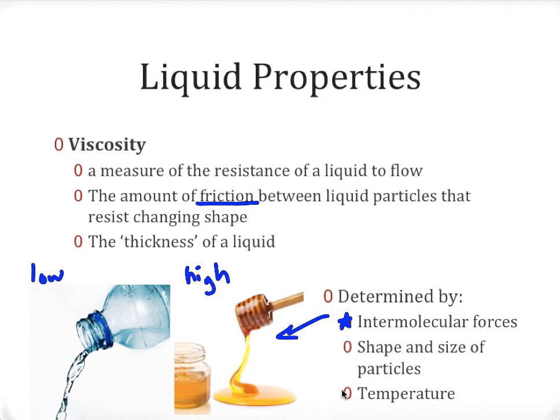Viscosity is also determined by the shape and size of the particles, and it is extremely temperature dependent. Generally, higher temperatures translate into lower viscosities. You can heat honey up, for example, and it'll pour much more easily than at a cooler temperature.